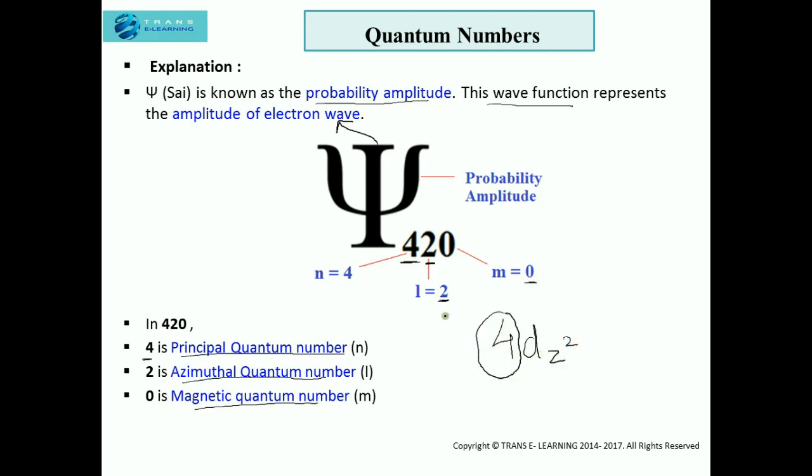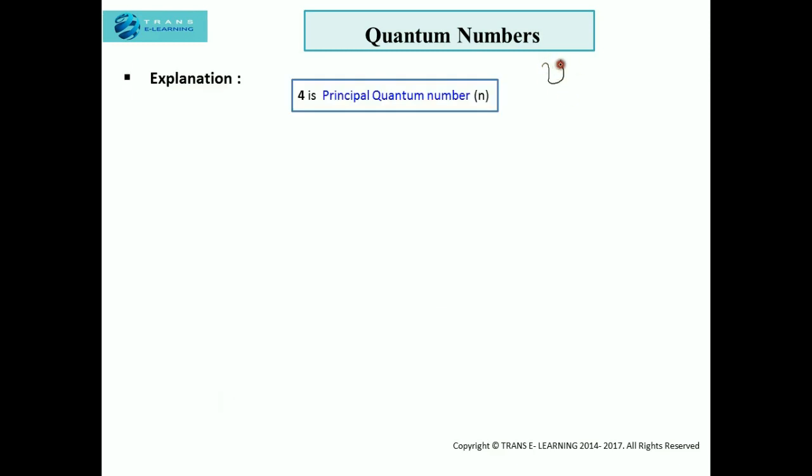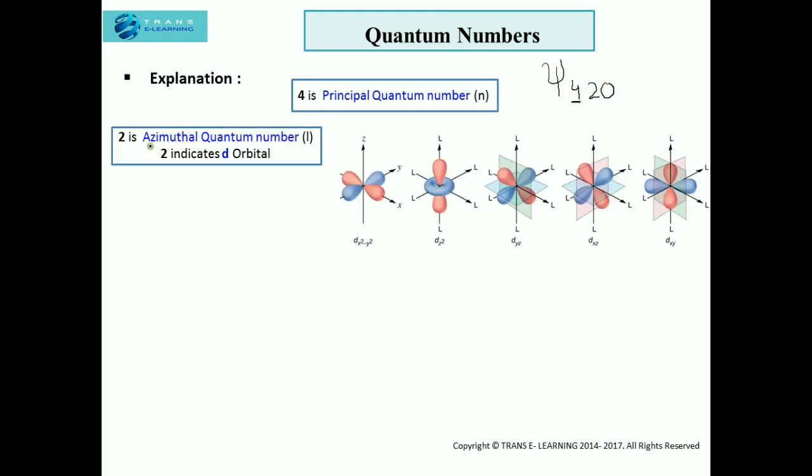So the answer for this is 4dz². We understand 4 represents the principal quantum number, but why have I written dz²? Here in ψ420, 4 represents the principal quantum number n, 2 represents the azimuthal quantum number, and 2 indicates the d orbital.